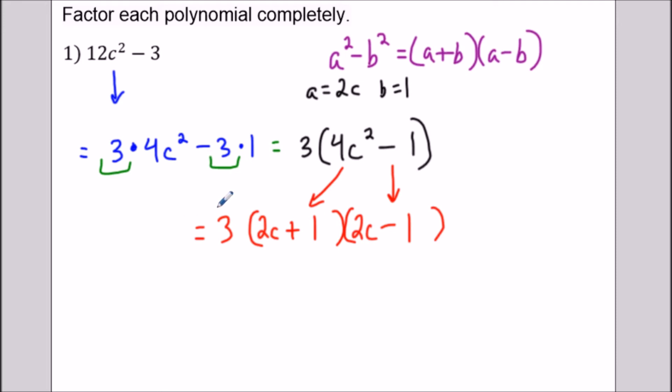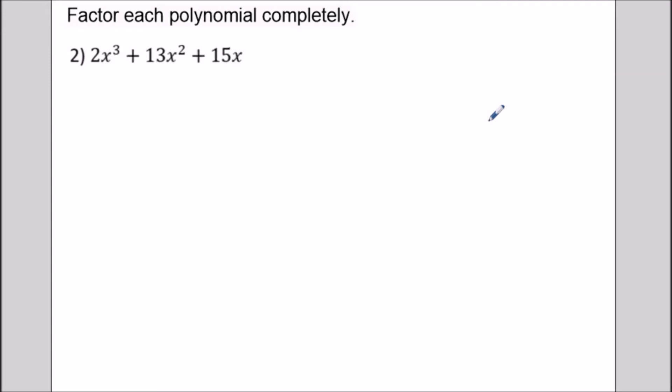Now to check your answer to these kind of questions you could just multiply everything back out but the solution to the first one is going to be 3(2c + 1)(2c - 1). Now for question 2 this one has a little bit more involved but it's going to start off the same way. We're going to want to factor out a greatest common factor here of x.